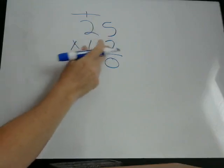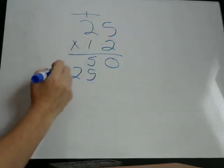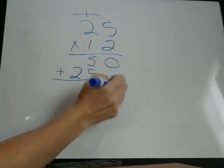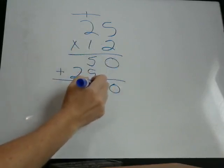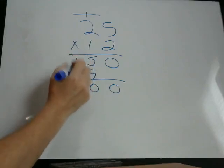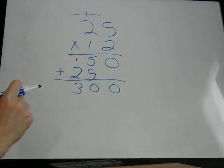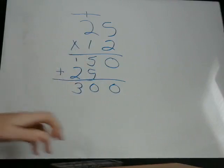Now that we're done with all the digits in the lower number, we add these together. 0 plus nothing is 0. 5 plus 5 is 10. Carry the 1. 1 plus 2 is 3. If you don't know how to do addition, watch my video on the Facebook page for addition. So your answer here is 300.